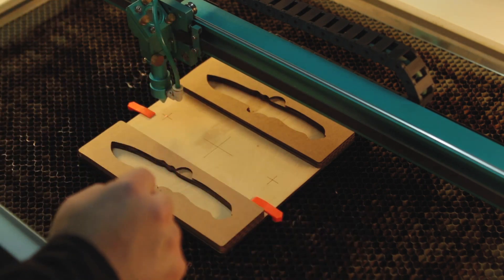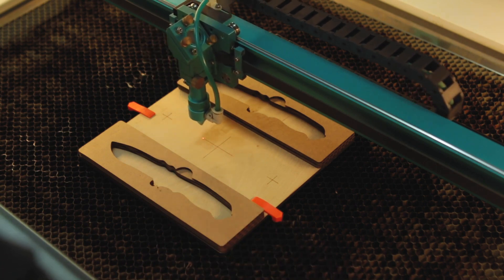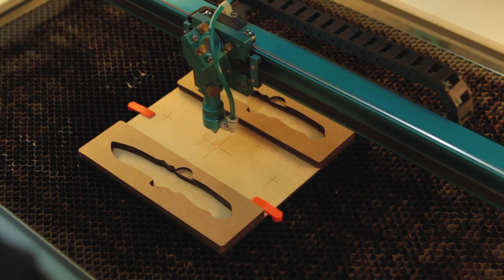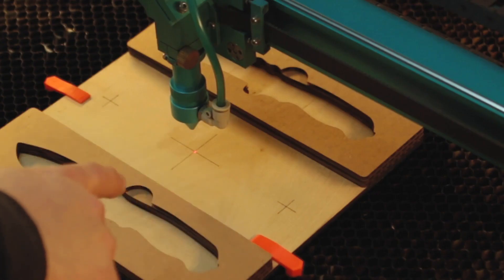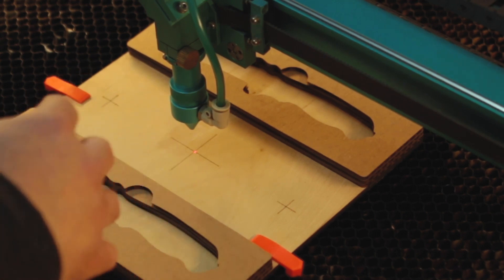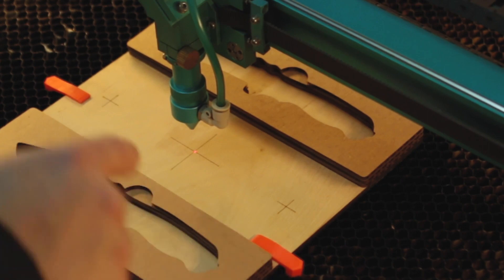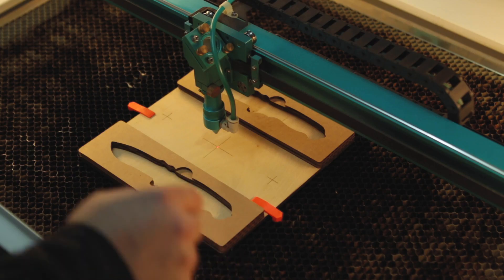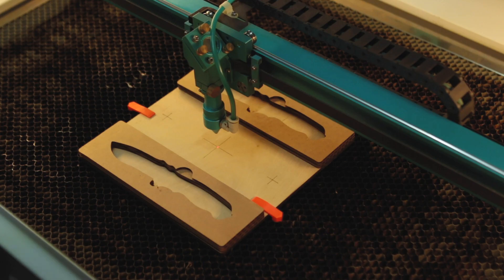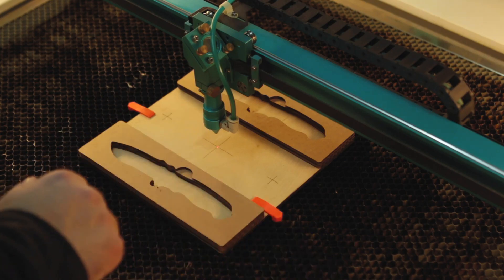Next we're going to come over here and line up the laser dot right in the center of our jig. Once you have it lined up in the center of your jig, that's when we are going to press the button that says origin and set an origin point for that particular spot. So now we've pressed the origin button and we have that locked in.